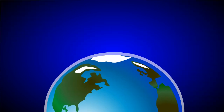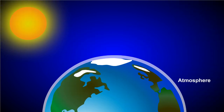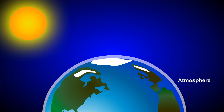Our Sun produces light which is composed of small particles called photons. These photons pass through the atmosphere and collide with the surface of the planet. If the surface is lightly colored, such as areas covered by ice or snow, the photons may be reflected back into space.